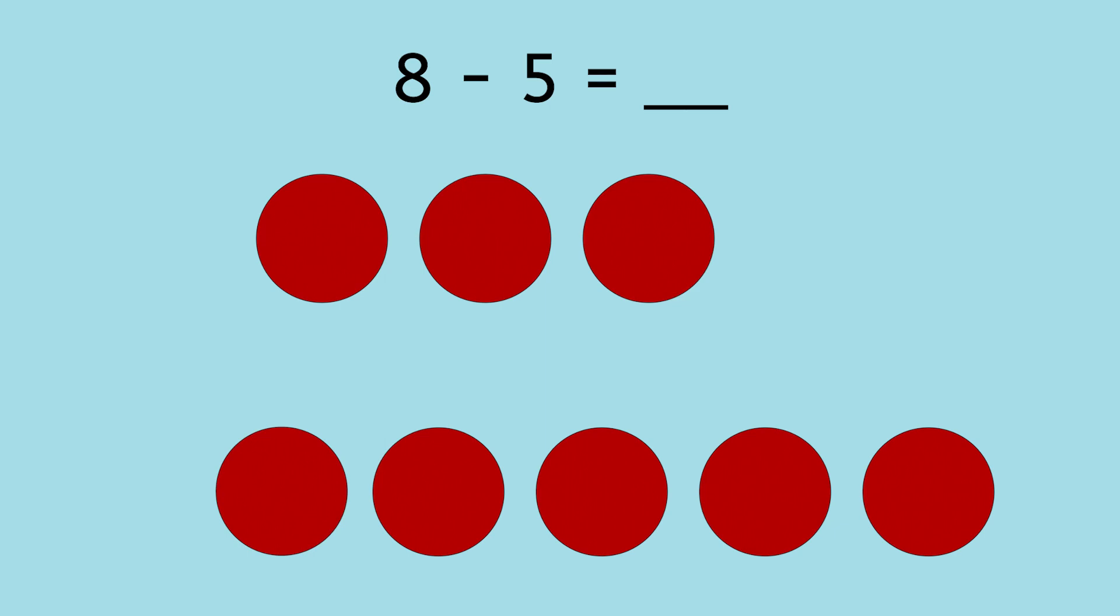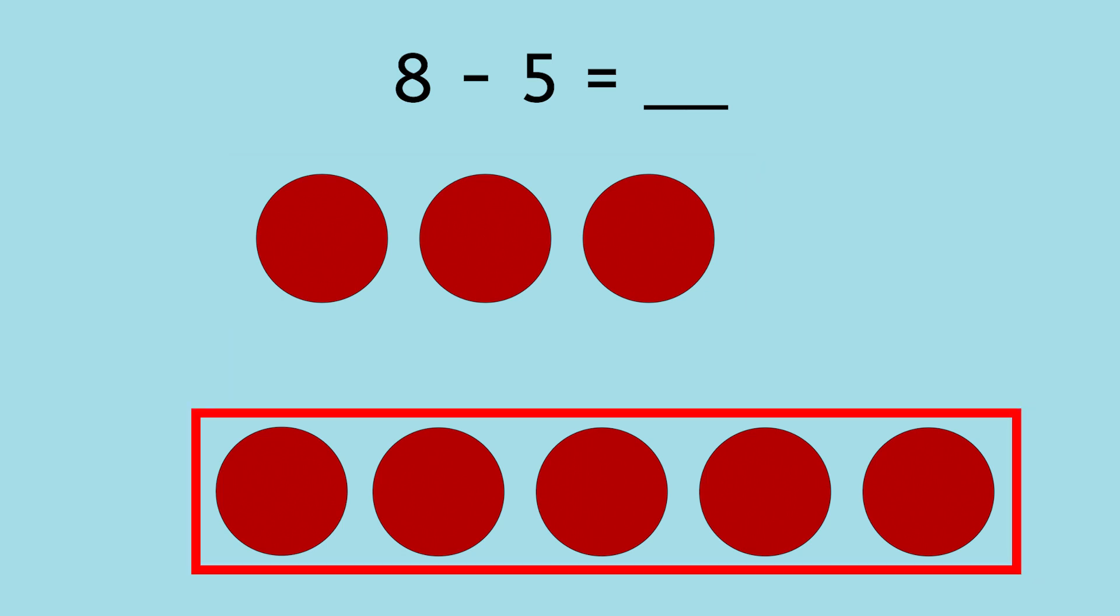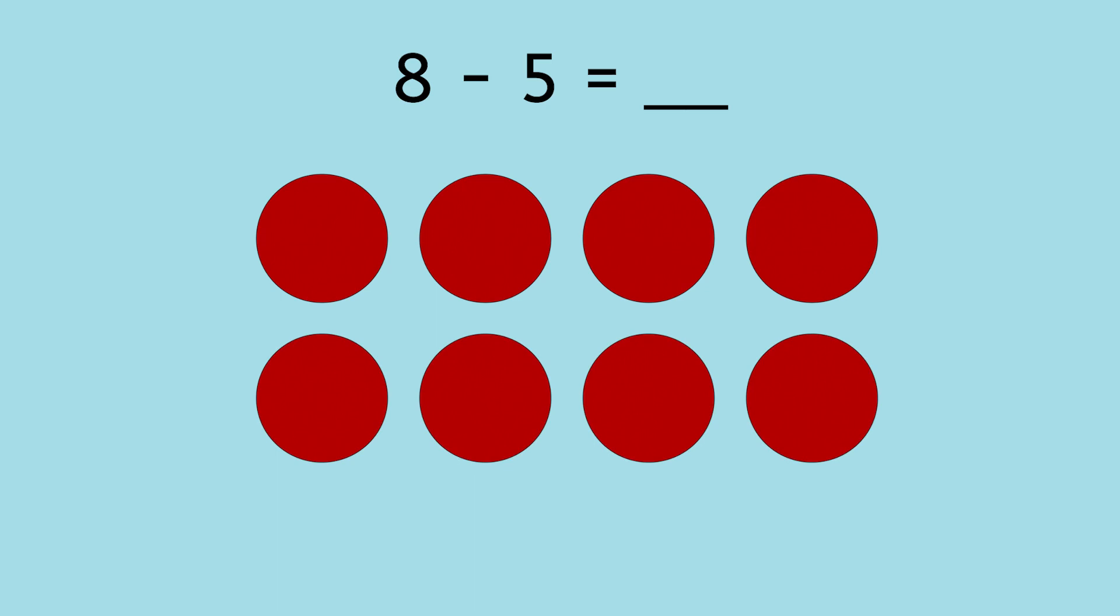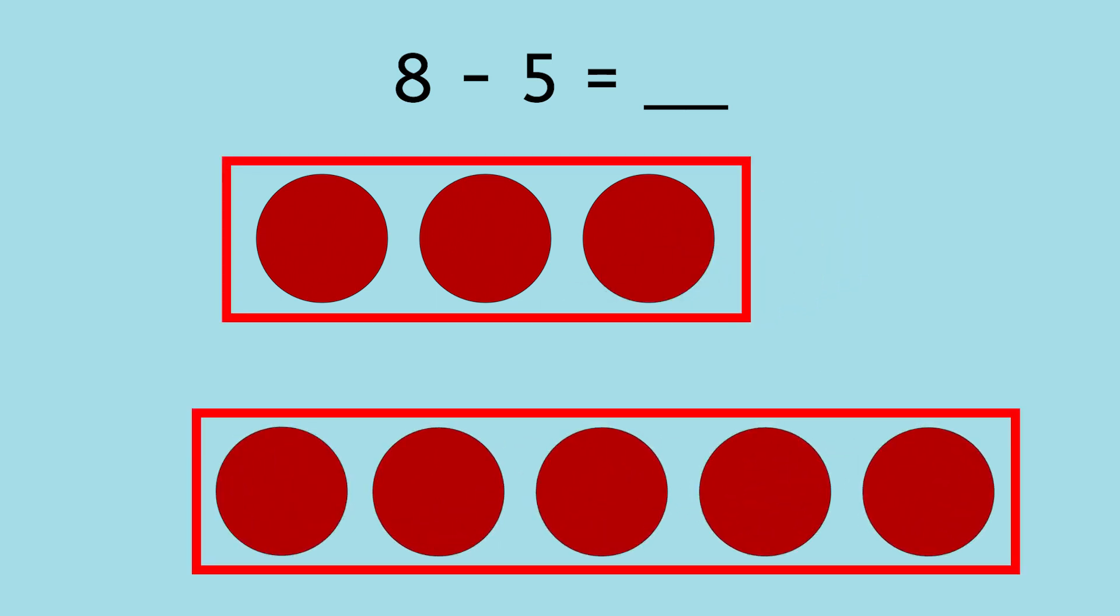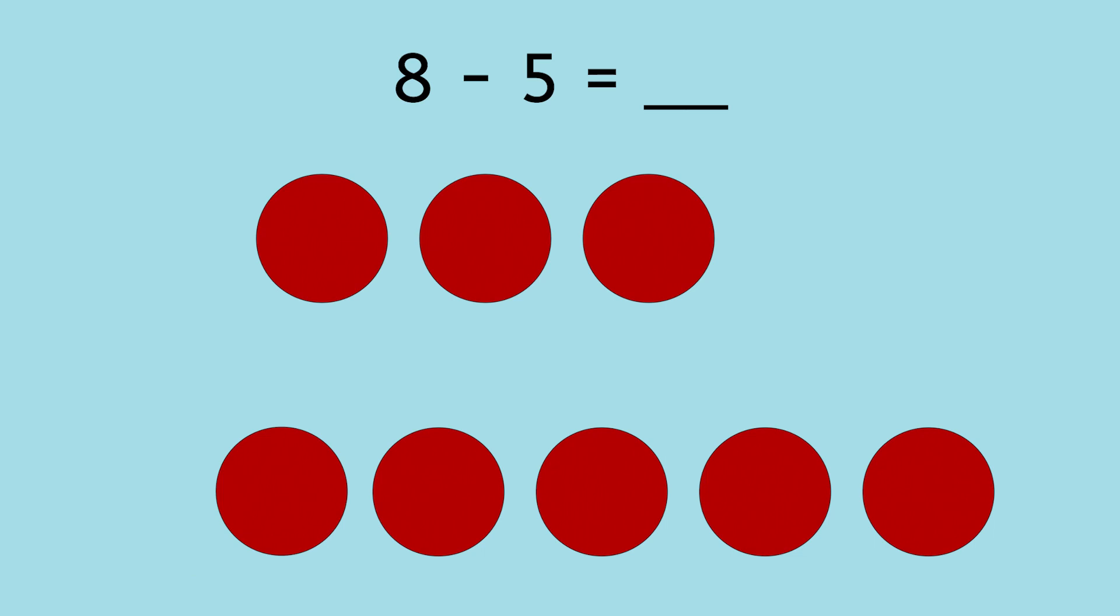Look at the counters. I have one set of counters here and another set over here. We broke up our whole into these two parts. Now to find our answer, we need to count how many counters are left. So that must mean eight minus five equals three. Good job!